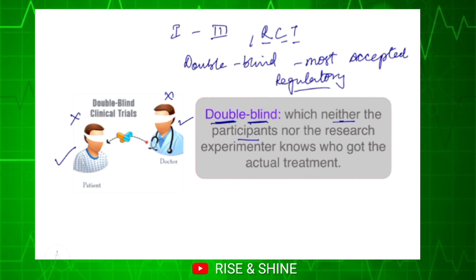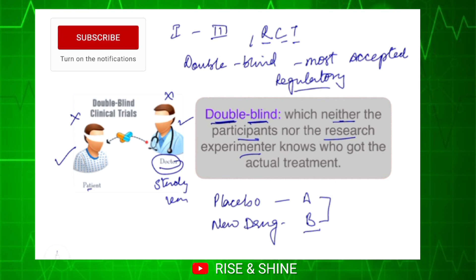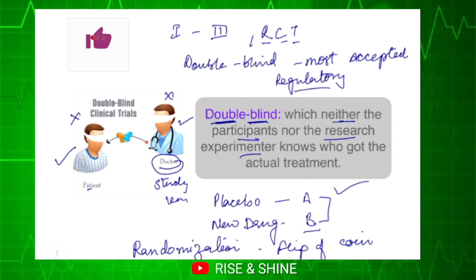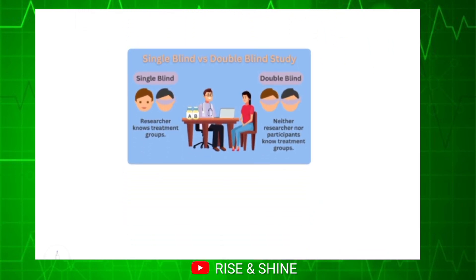Carrying on with our previous example: if there is a placebo group as treatment arm A and a new drug as treatment arm B, neither the investigator, doctor, nor the study team — nor the patient — will know which group the patient is in. They are divided into treatment groups by randomization. Randomization is like a flip of a coin — heads means you are in the placebo group, tails means you are in the new drug group. This is mostly a computerized program. In a nutshell: in double blind, neither the patient nor the doctor knows which treatment group the participant is in.